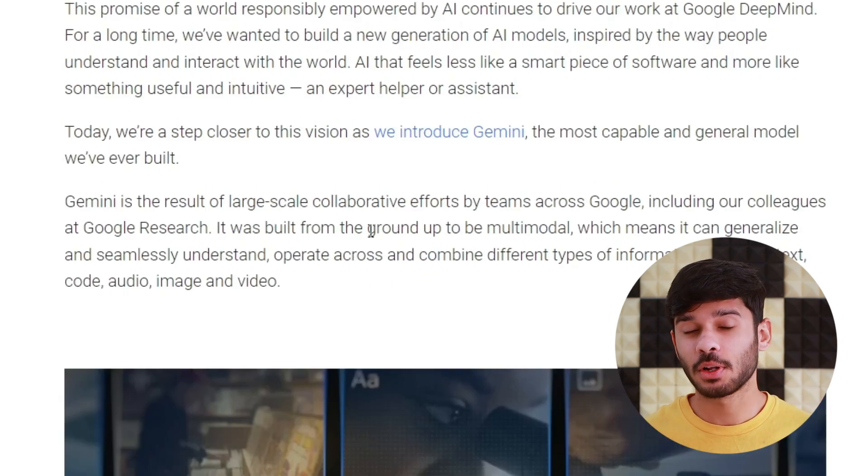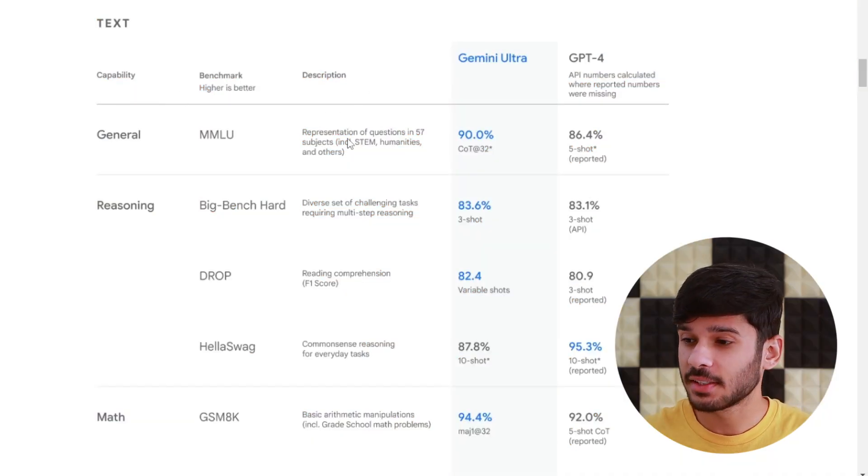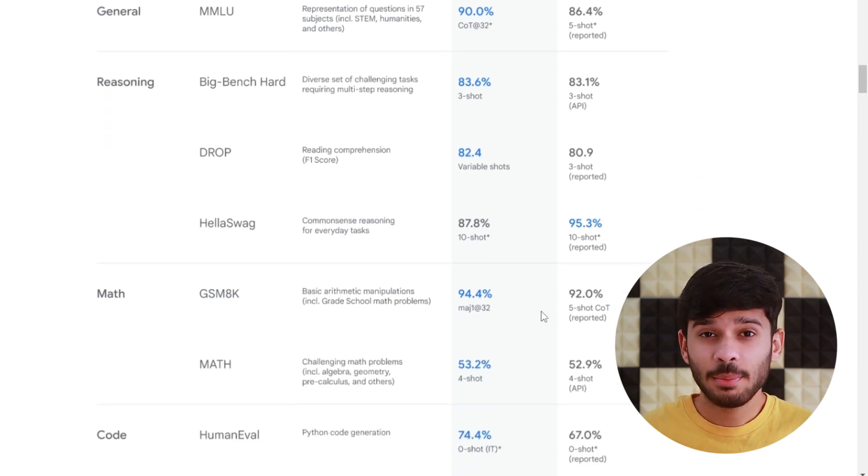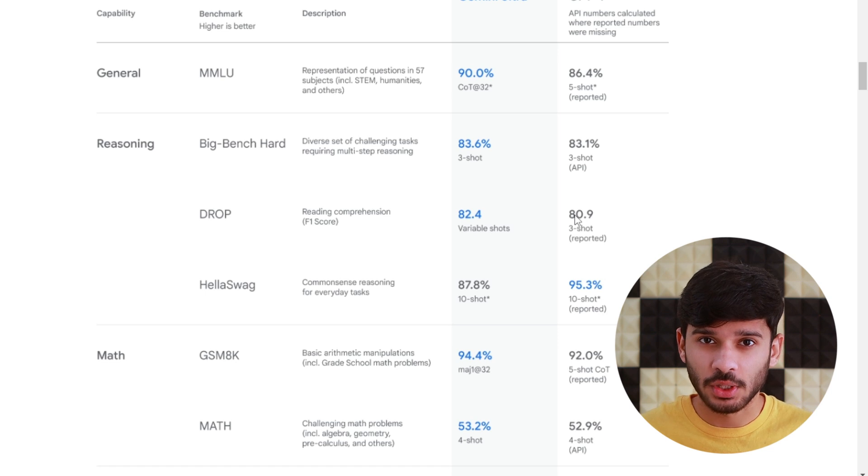This model is built from the ground up to be multimodal, while GPT-3 and GPT-4 were initially trained from the ground up to be text models and have recently been upgraded to accept both images and audio. Now in benchmarking tests, Gemini Ultra outperforms GPT-4 in most cases. Keep in mind Gemini Ultra is the model we don't have access to yet, but we'll probably get access by next year. We have Gemini Pro, which is a close comparison to GPT-3.5. But this Gemini Ultra, when given these tests, outperformed GPT-4.